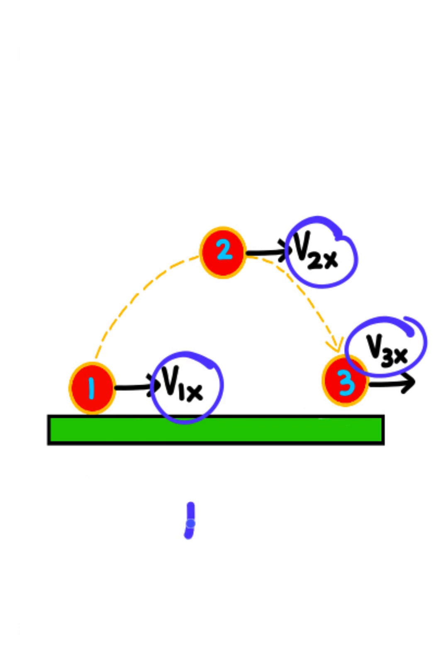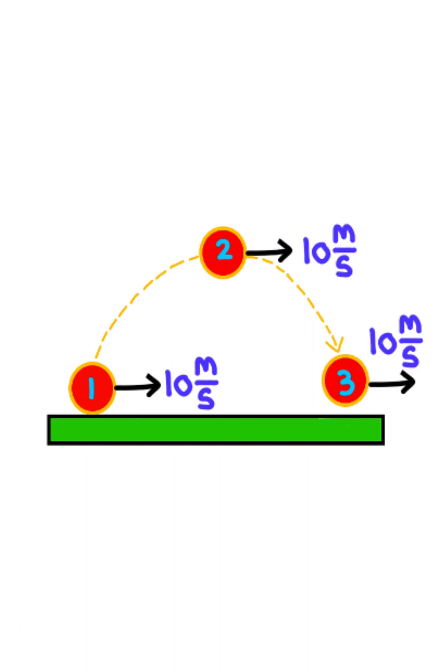So, for example, if the initial velocity in the x direction is 10 meters per second, then at every point of the ball's flight, the horizontal velocity will remain 10 meters per second.